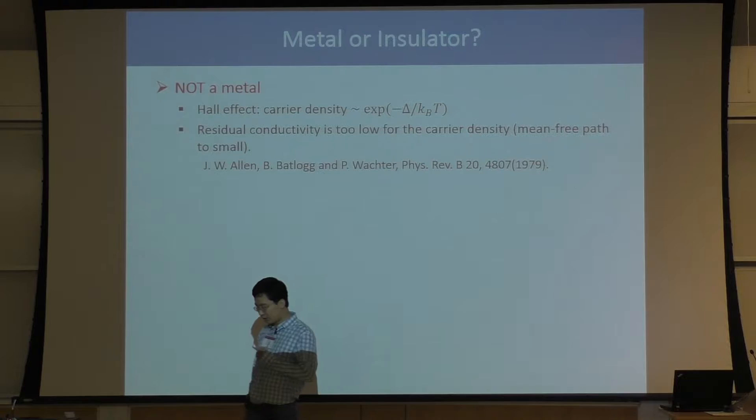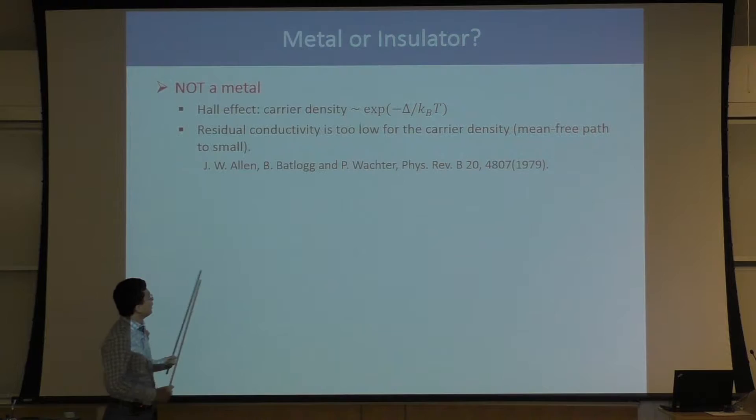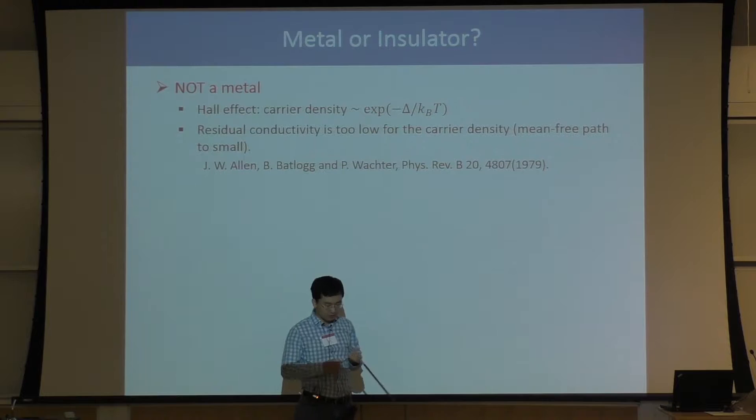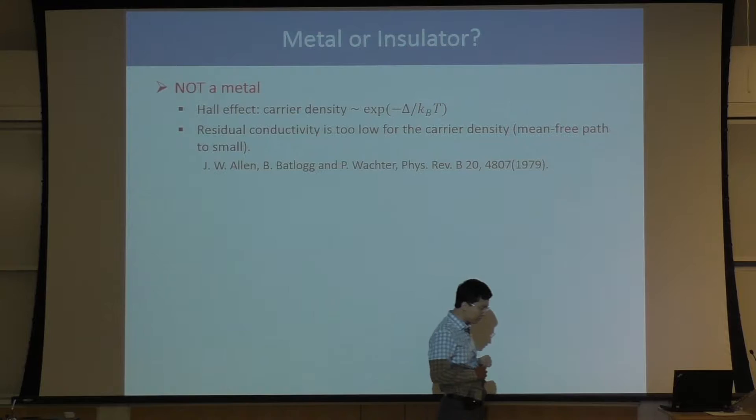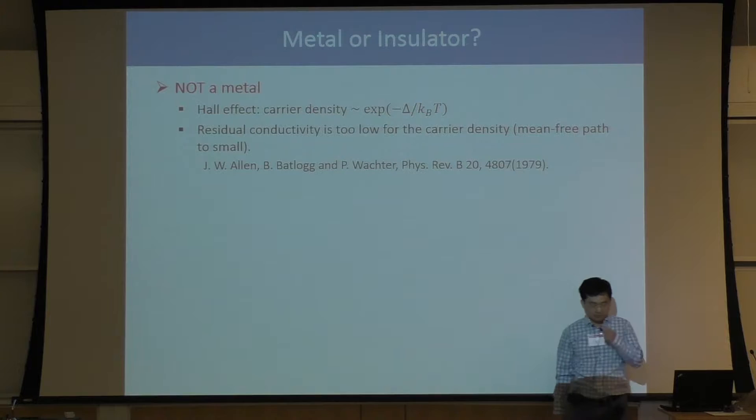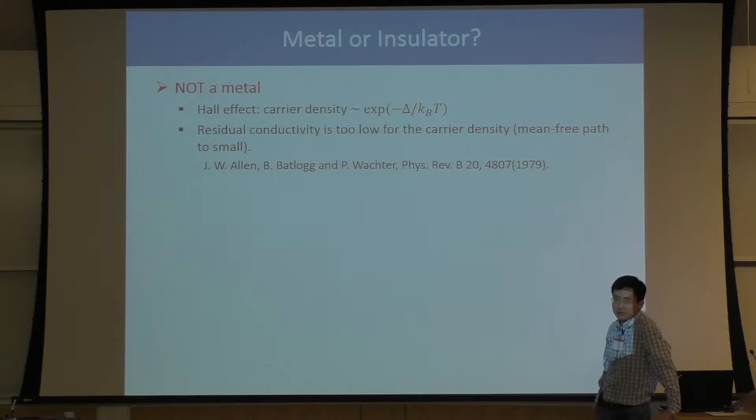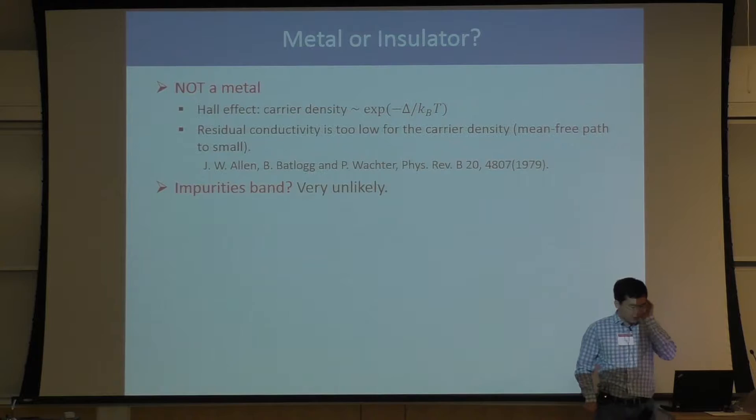Jim measured the Hall conductivity. The classical Hall effect tells us the Hall conductivity gives the electron density — how many charge carriers we have. The charge carrier in SMB6 has a temperature dependence that fits very well with exponential behavior. We all know from statistical mechanics that if you see particle number with this temperature dependence, it only means one thing: there is a gap in your energy spectrum. If you have a gap for your charge carrier, this is an insulator.